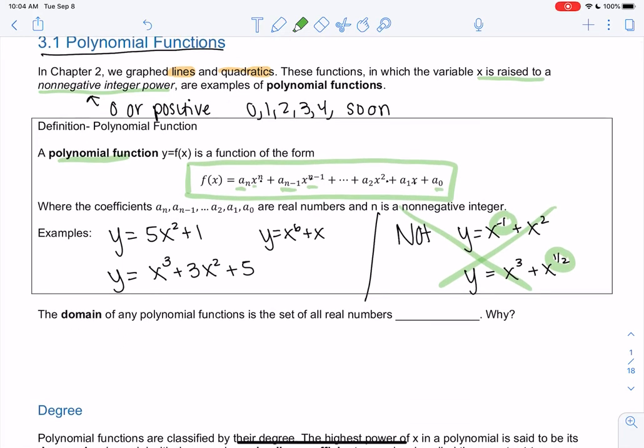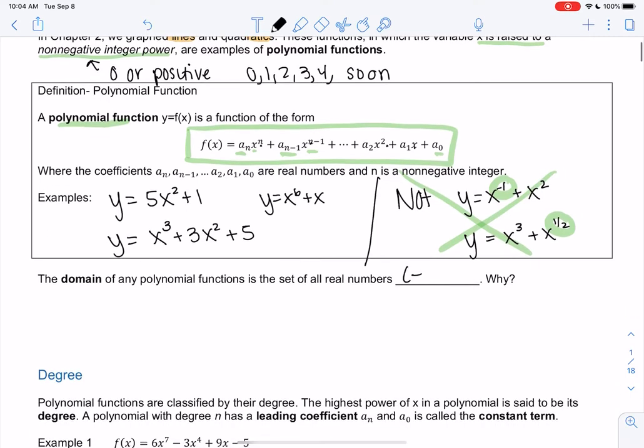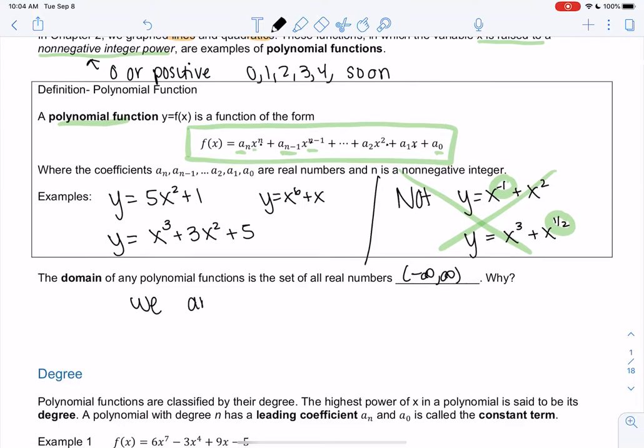The domain of polynomials is all real numbers, negative infinity to infinity. That's because we are allowed to plug in any real number for x. There are no values that make the denominator 0 because x is never in the denominator. There's no square roots, no weird issues. There's no restrictions for x, which means anything is allowed.